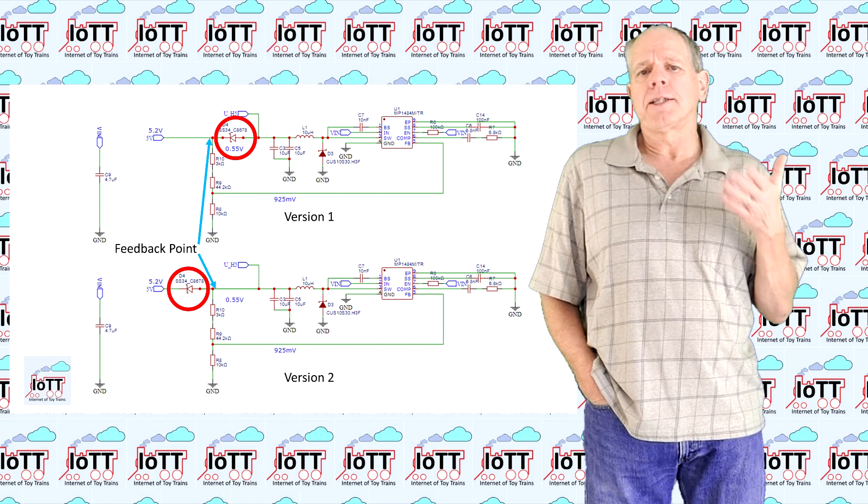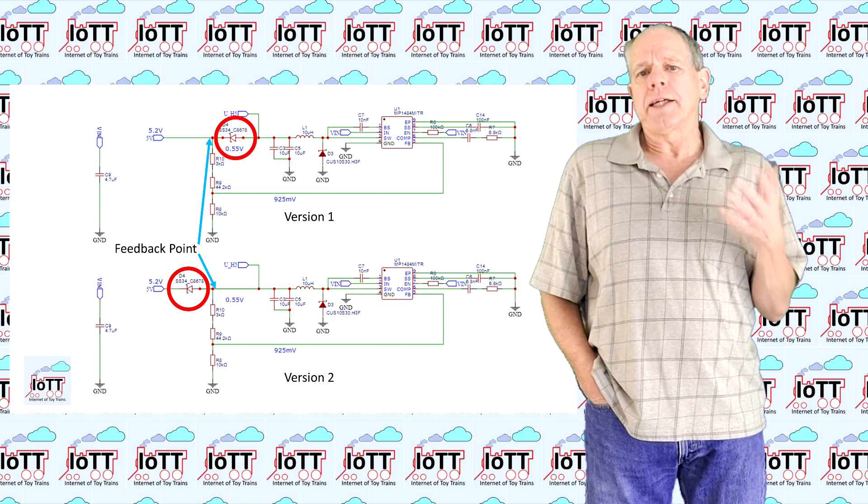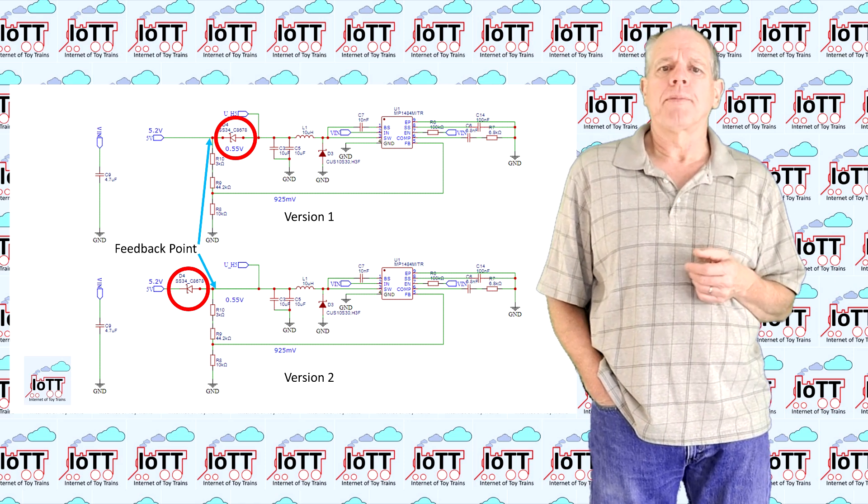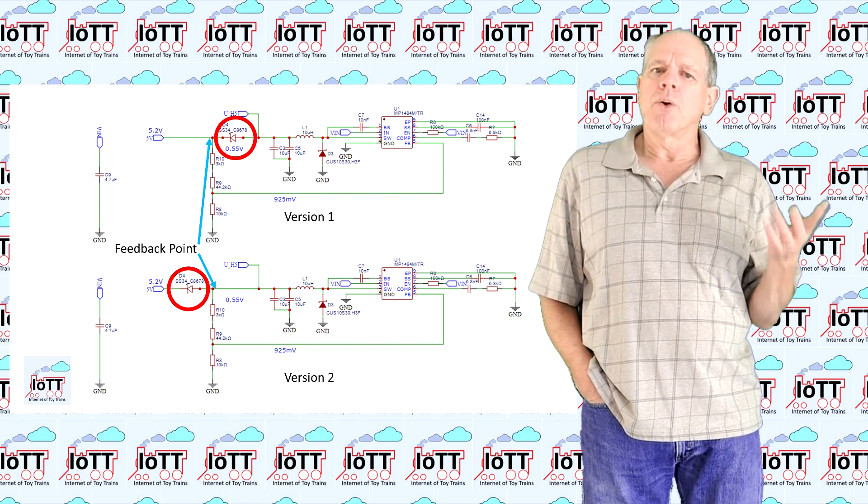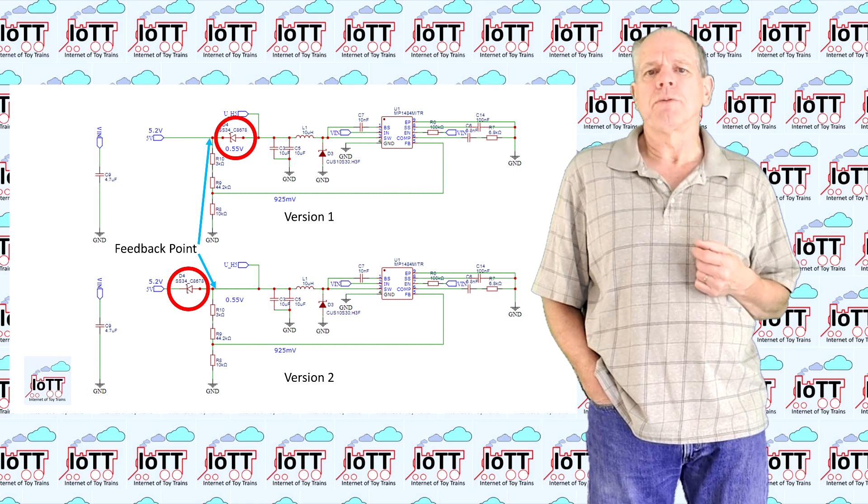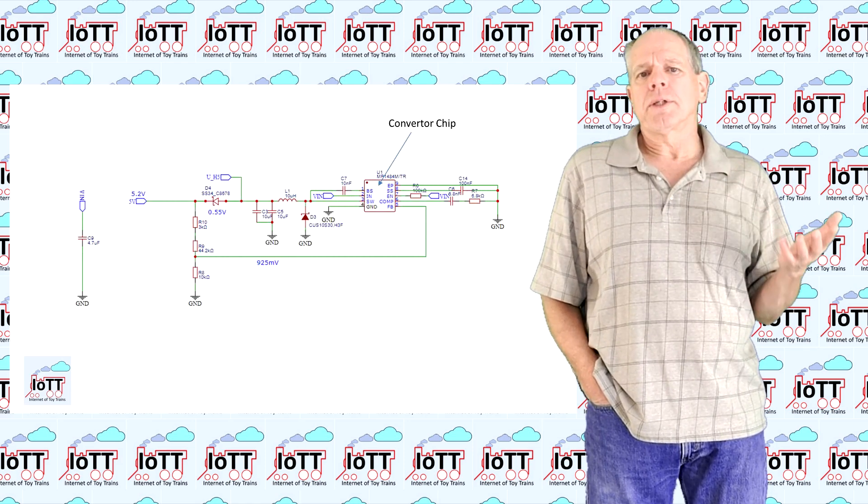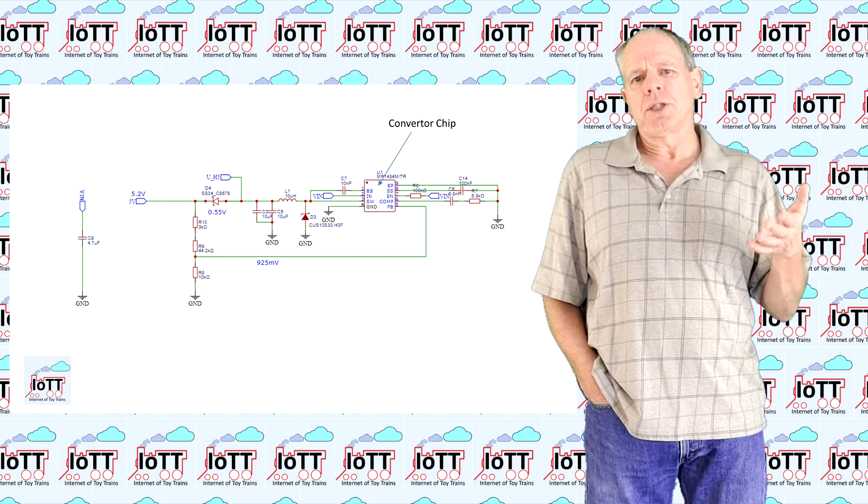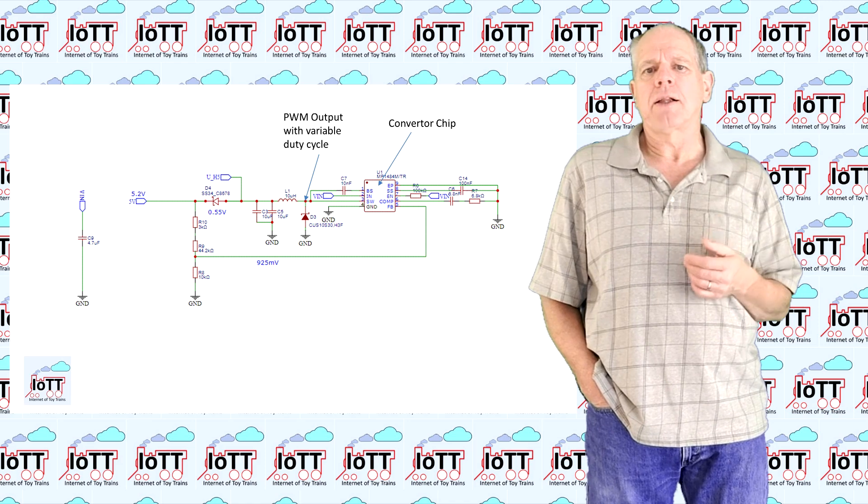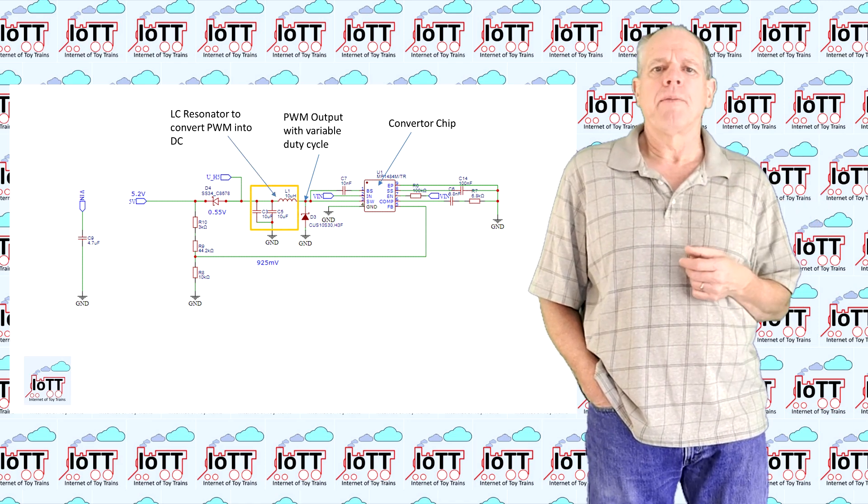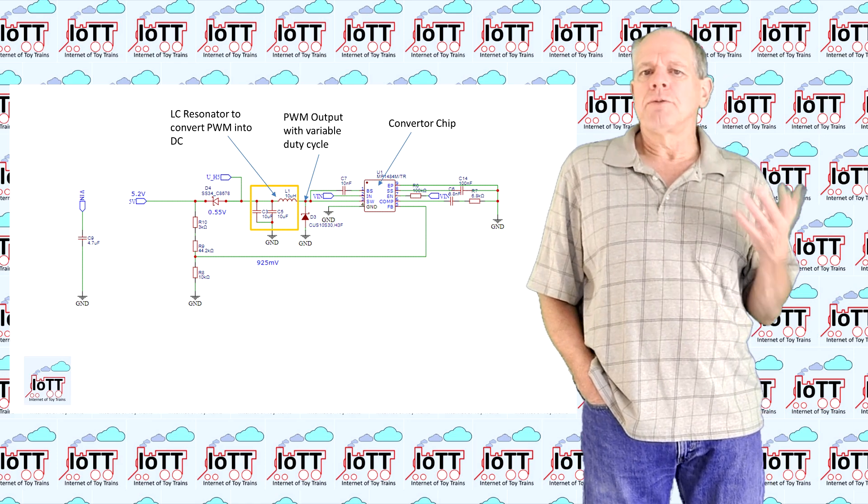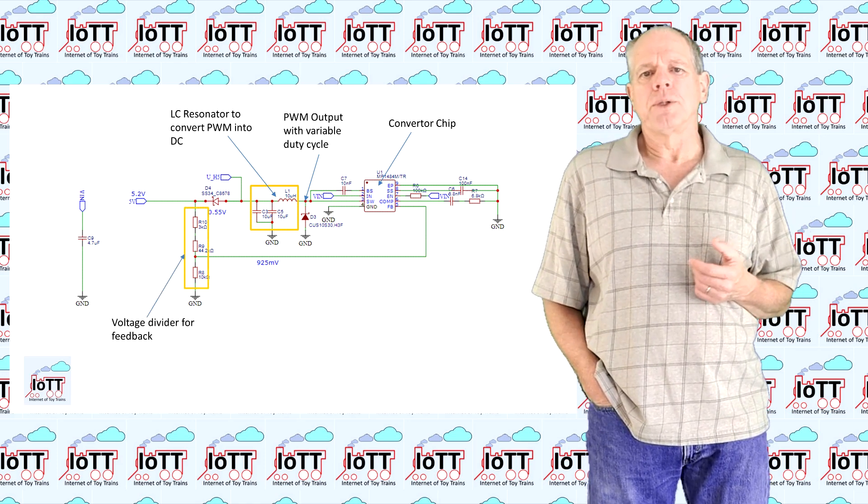The first version had the diode before, the second version had it after the connection point of the feedback loop. At this point it is important to understand how the voltage regulation of a DC output works. The converter chip tries to keep the voltage of the feedback input stable by changing the duty cycle of the output to the coil.